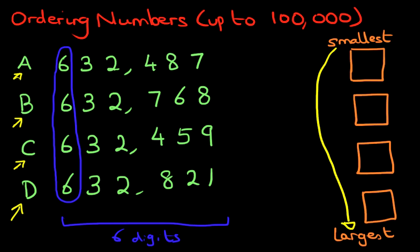We're now going to move across to the ten thousands. Those are the ten thousands — and what do you notice? That's right, they're all the same. So we still cannot work out which is larger and which is smaller. So what do we do? We keep going.